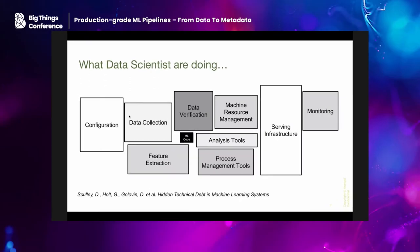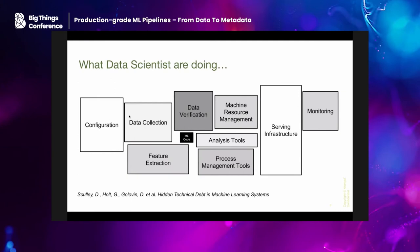Unfortunately, in reality it looks a little different. This is a chart from a Google paper — probably many of you have seen it — about the hidden depth in machine learning systems. They try to quantify where machine learning teams are spending their resources and time. Only this little black box in the middle is the actual machine learning code. Basically everything around it — data collection, data verification, resource management — is actually way more cost-intensive in terms of time compared to the actual ML code.